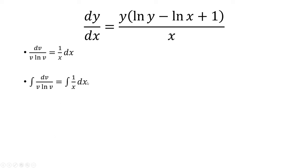Integrate both sides. And in order to integrate the left side, I have to use a u substitution. So u will be ln of v. So then du is 1 over v.